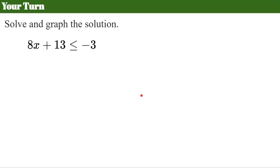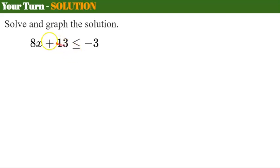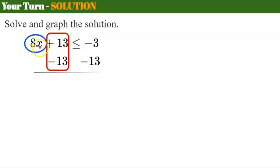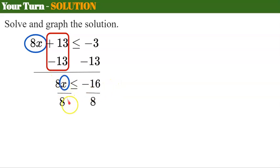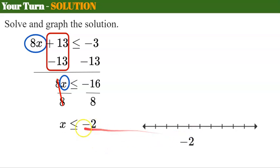Your turn again. Please pause the video now, solve, graph your solution, and come back to check your work. Welcome back. We identify our variable term — it's being added by 13. We create our zero pair by subtracting 13 from each side, leaving 8x less than or equal to negative 16. x is being multiplied by 8, so the inverse is to divide each side by 8. 8 divided by 8 is 1 giving me x less than or equal to negative 16 divided by 8, which is negative 2. We use a closed circle on negative 2 and shade to the left.